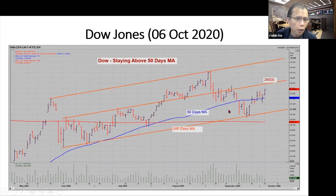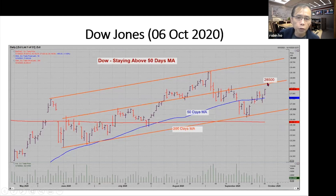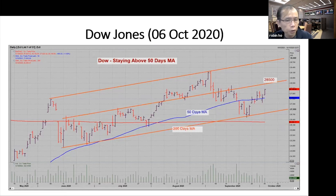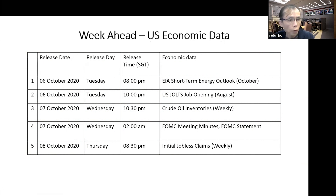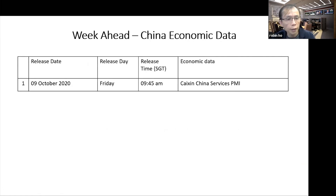My trade plan correctly predicted the top of Dow Jones and correctly predicted the bottom. I believe the trade plan is still working — I have a target for Dow Jones at 28,500, which is where we could get some resistance. Watch that figure. At the moment, short-term, things look bullish — Dow Jones is above the 50-day moving average. For this week, some key economic data to watch: especially Wednesday, we get FOMC minutes, which a lot of people are looking at for what the Fed has to say. This Friday, Chinese economic data is crucial — look out for the Caixin Chinese Services PMI.